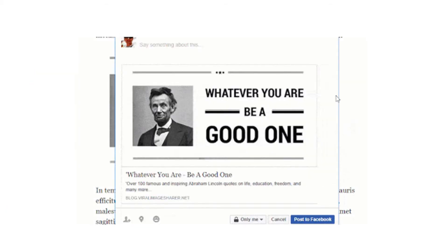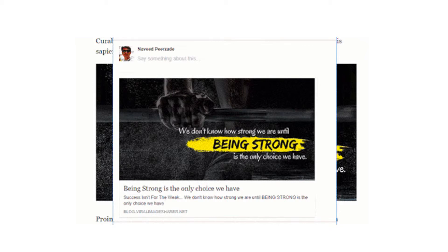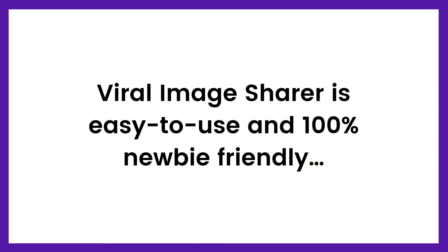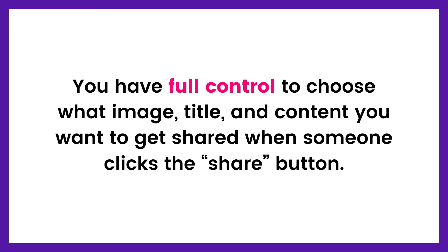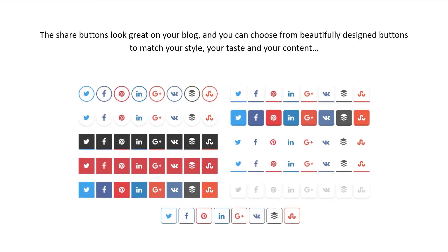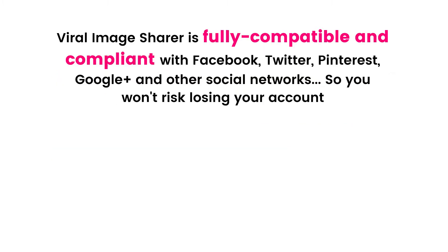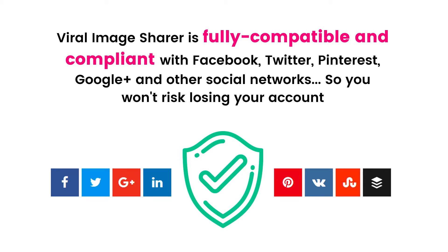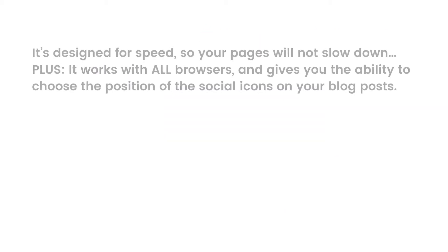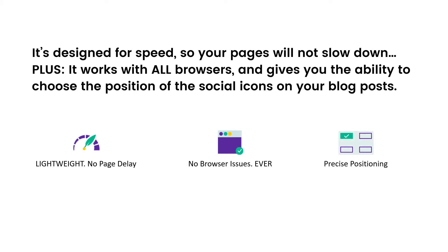And it all starts with making images on your blog shareable. Viral Image Sharer is easy to use and 100% newbie friendly. You'll have full control to choose what image, title, and content you want to get shared when someone clicks the share button. The share buttons look great on your blog and you can choose from beautifully designed buttons to match your style, your taste, and your content. Viral Image Sharer is fully compatible and compliant with Facebook, Twitter, Pinterest, Google+, and other social networks, so you won't risk losing your account. This plugin is designed for speed so your pages will not slow down, and it works with all browsers and gives you the ability to choose the position of the social icons on your blog post.